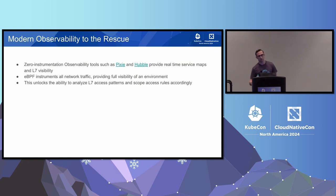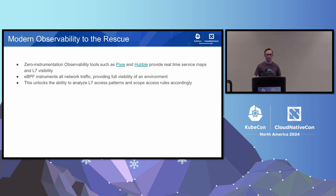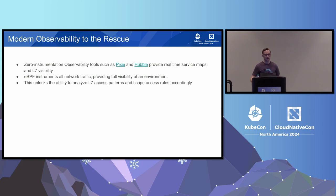I think modern observability is to the rescue. We've had a rise of zero instrumentation observability tools, things like Pixie and Hubble, that provide real-time service maps and layer 7 visibility. Through the power of eBPF, they instrument all network traffic, providing full visibility of an environment. This means there's no blind spots, nothing gets missed, nothing needs to be manually instrumented. And because of their ability to peek in at the layer 7 level, this allows us to analyze access patterns and scope access rules accordingly.